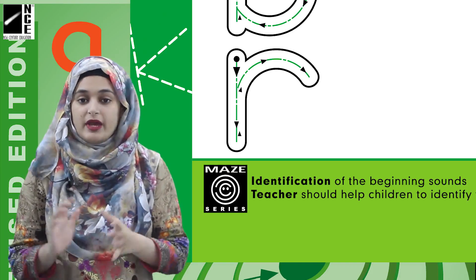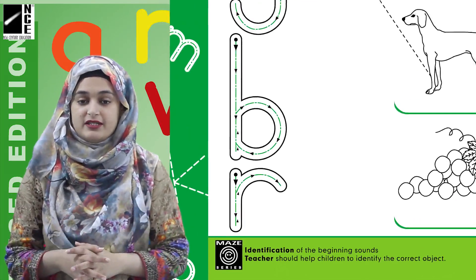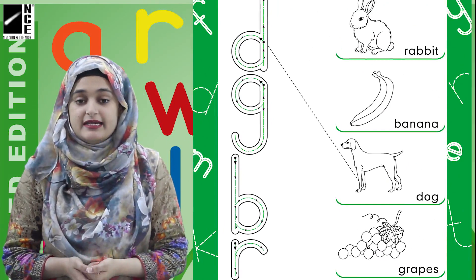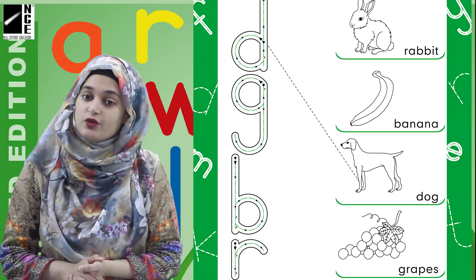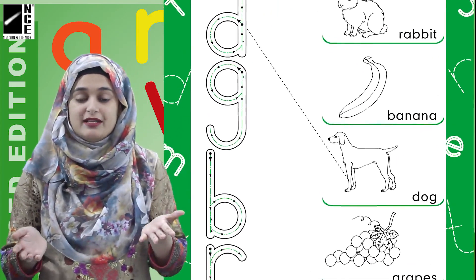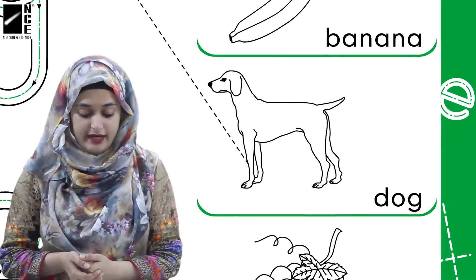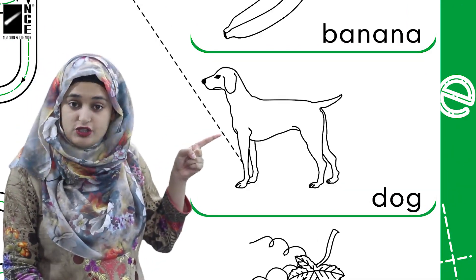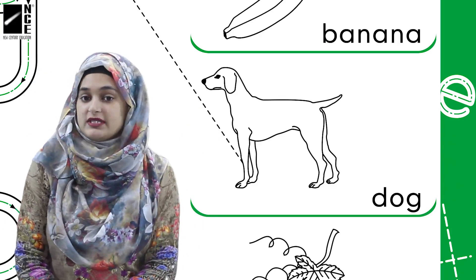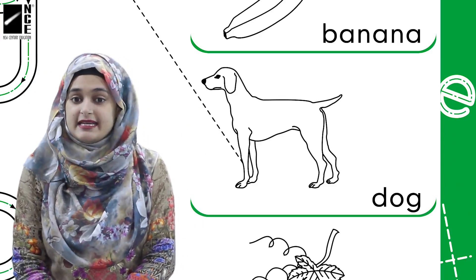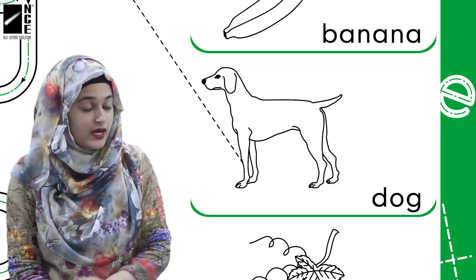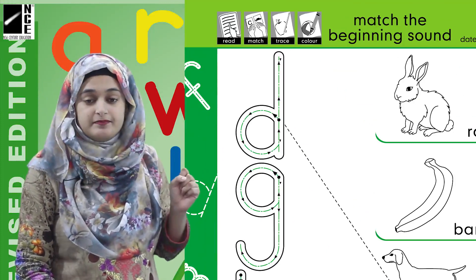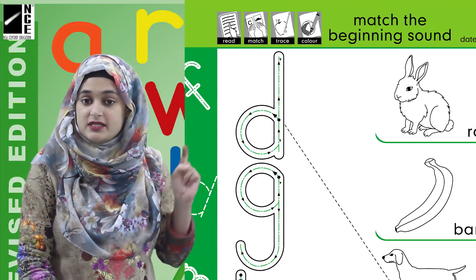Ab hami kya karna hai? We have the pictures and we have the letters. We have to match the letter with its respective picture — the picture that starts with that beginning sound. For your ease there is an example given. This is a dog. What is the beginning sound of dog? It is D, and look, this dog is matched with D. D dog.